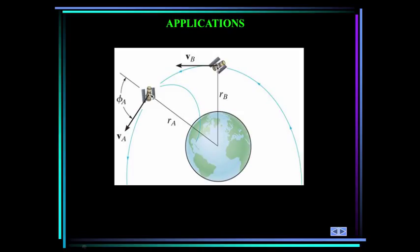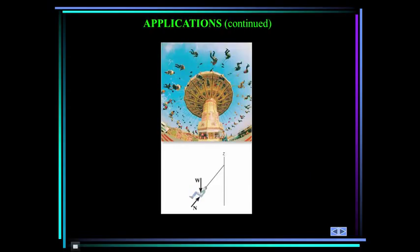Here we have a satellite at two positions, A and B. As the distance from the center of the Earth changes, how does the velocity change? Here's a ride at an amusement park, and here we see the free body diagram. As this person moves further away from the z-axis, or closer to the z-axis, what happens to his velocity? These sorts of problems can be solved using angular momentum.